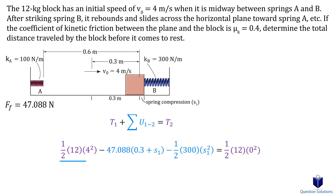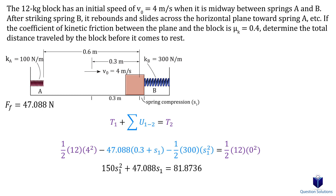We write the work and energy equation: half the mass times the initial velocity squared, plus the work being done. The frictional force does negative work over a total distance of 0.3 plus s, where s is the spring compression. Even while the spring is being compressed, the block experiences friction. The spring also slows the block to a stop, doing negative work: half times the stiffness times the displacement squared. All of that equals the final kinetic energy, which is zero since the block stops.